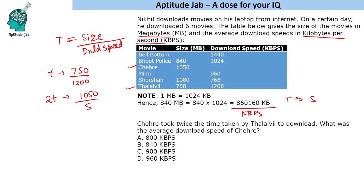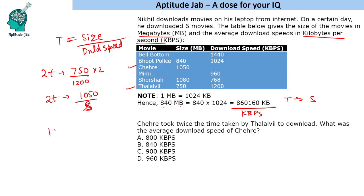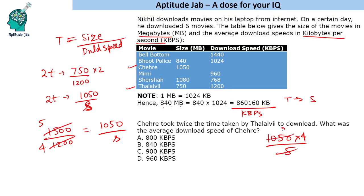To find Chehre's download speed s, we equate: 1500 ÷ 1200 = 1050 ÷ s, which simplifies to 5/4 = 1050/s. So s = 1050 × 4 ÷ 5 = 210 × 4 = 840 kilobytes per second. Time is directly proportional to size and inversely proportional to speed — that gives us 840 KB/s.